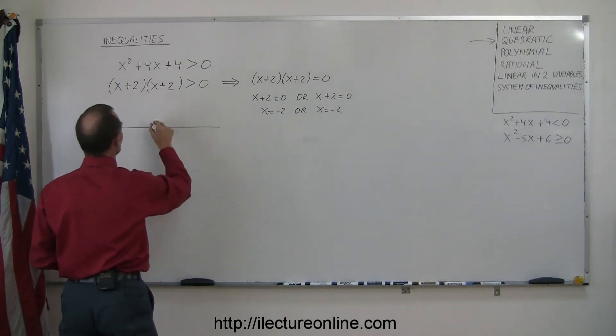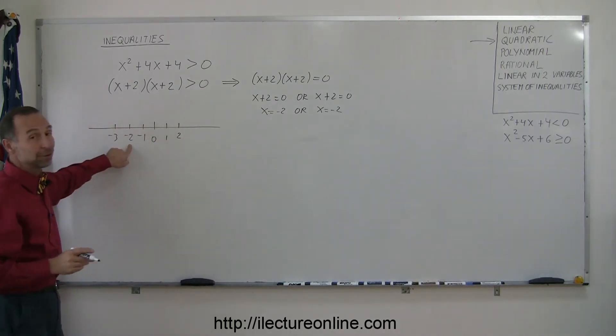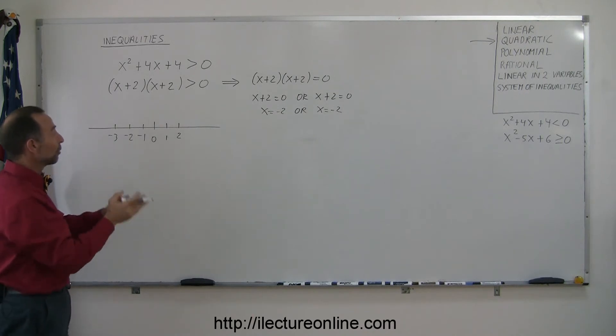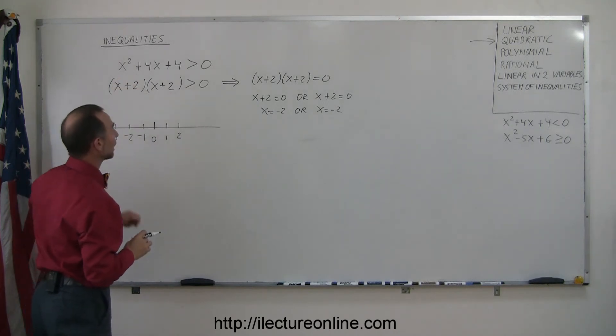Let's draw that. Here's the number zero, one, two, negative one, negative two, negative three. So there's only one point, x = -2, that provides the division between two regions in this case that will offer a possible solution to our inequality.